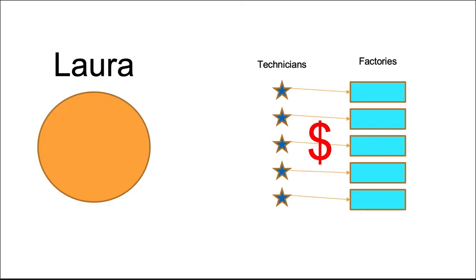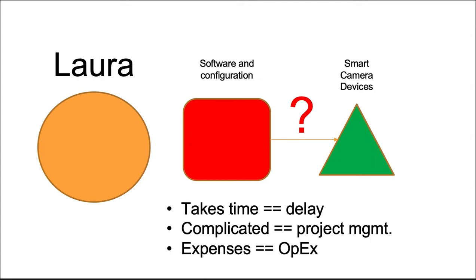Or, sending technicians out into the field after the cameras are already delivered to the factories to load the software and configure it on-premises. Either approach will introduce a week or more of delay, require extensive project management coordination, and introduce extra expense. If the smart camera supports SDO, all three of those issues can be mitigated.